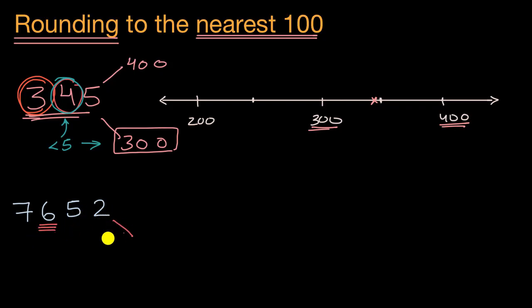And so either way, the hundreds that are right below this is 7,600 or 7,600. And the hundreds that are right above this, well, you would just take one more than this six, so that would be 7,700.